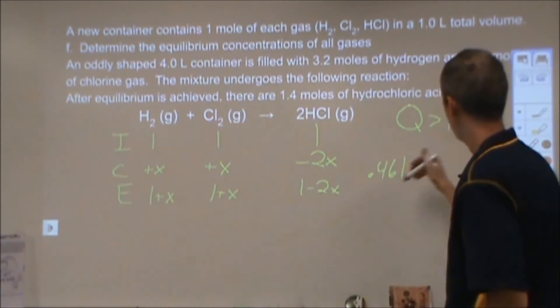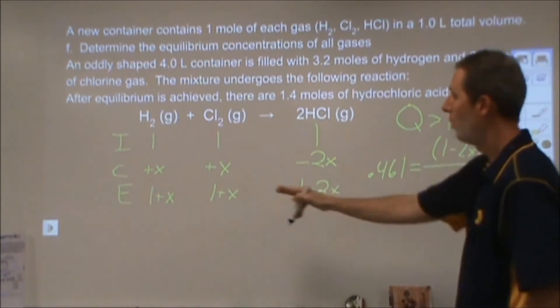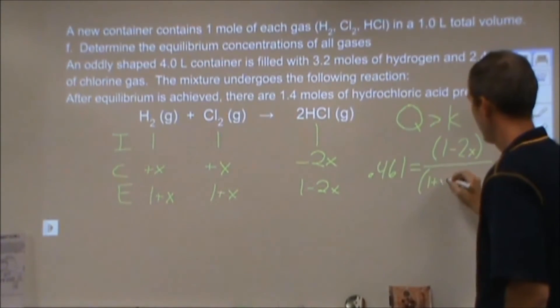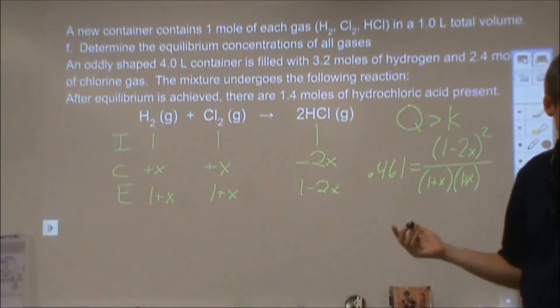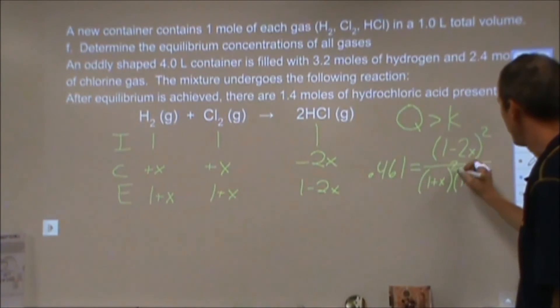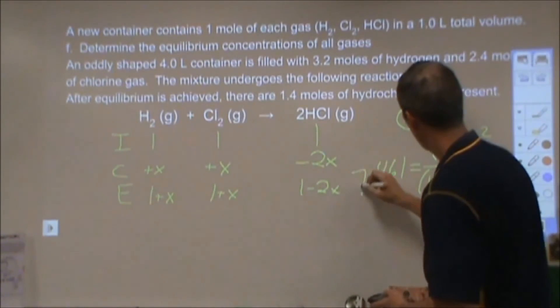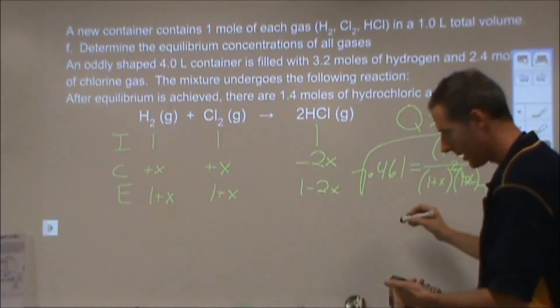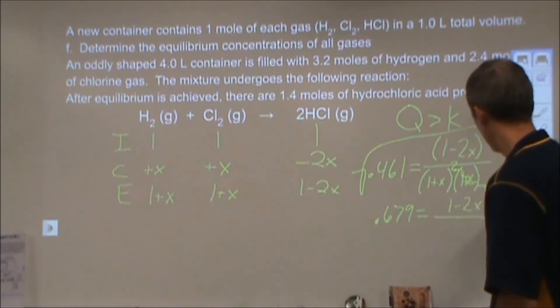And that's equal to this concentration squared over the 1 plus X for the hydrogen times the 1 plus X for the chlorine. So what I can do from there is I can say these are the same thing. This is really 1 plus X squared. And I can take that 0.461 and I can square root this whole thing. If I square root the whole thing, I'm going to end up with 0.679 is equal to 1 minus 2X over 1 plus X.